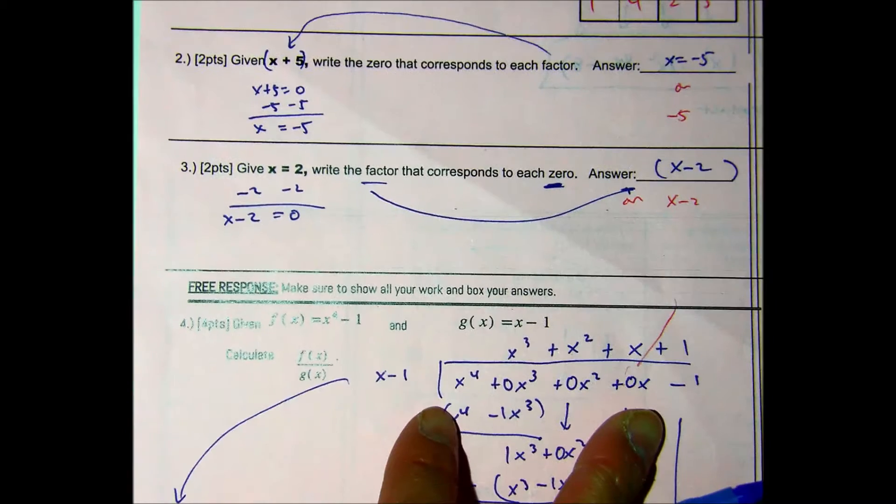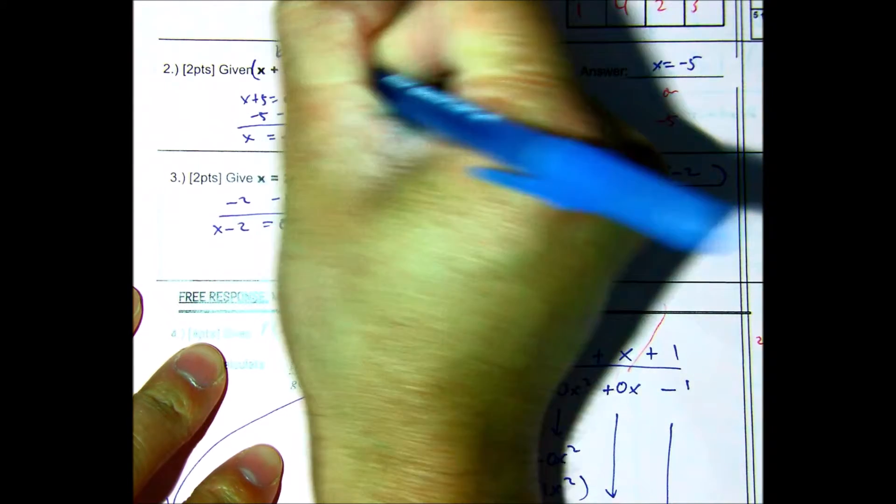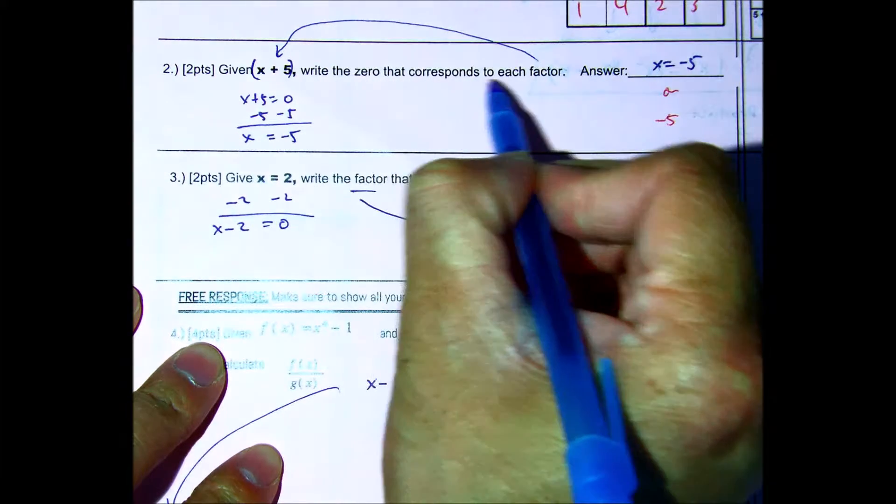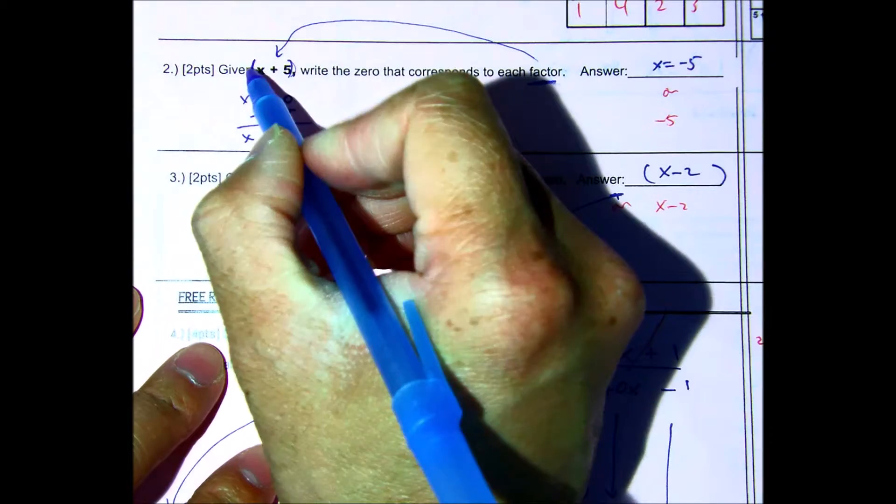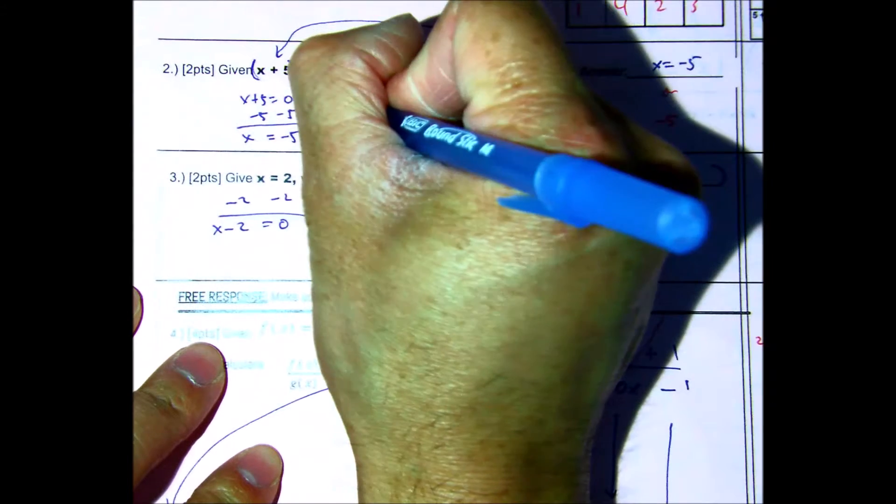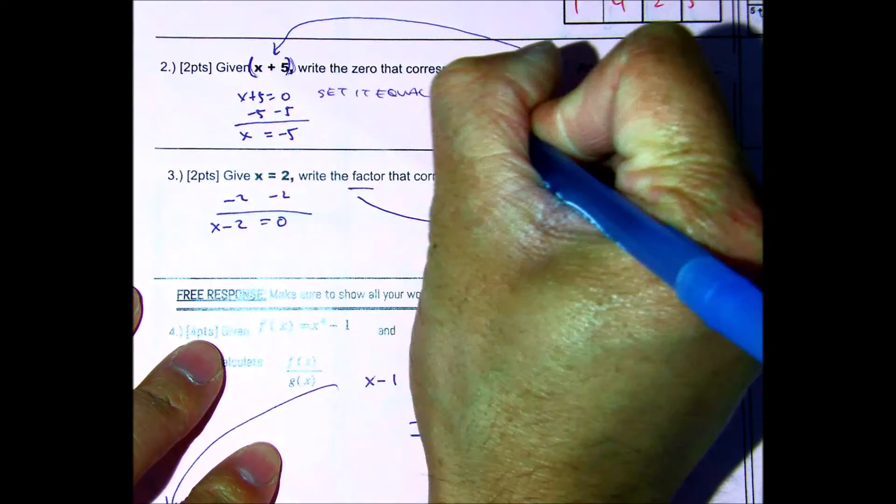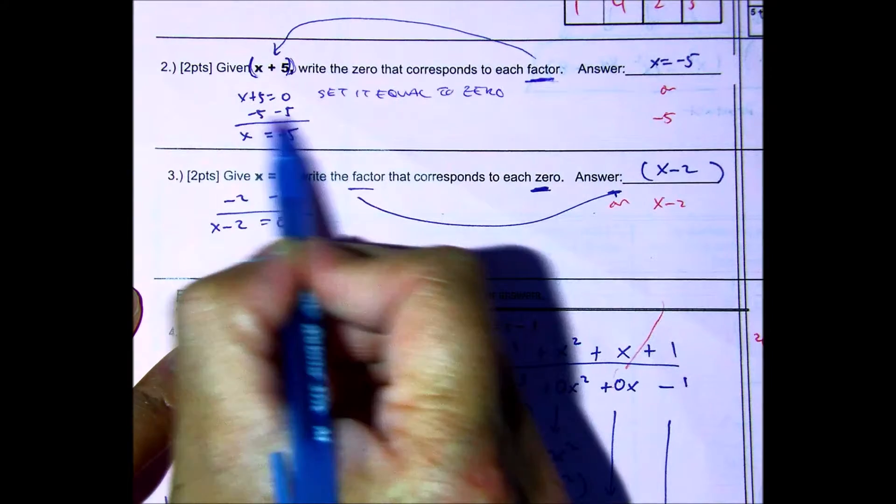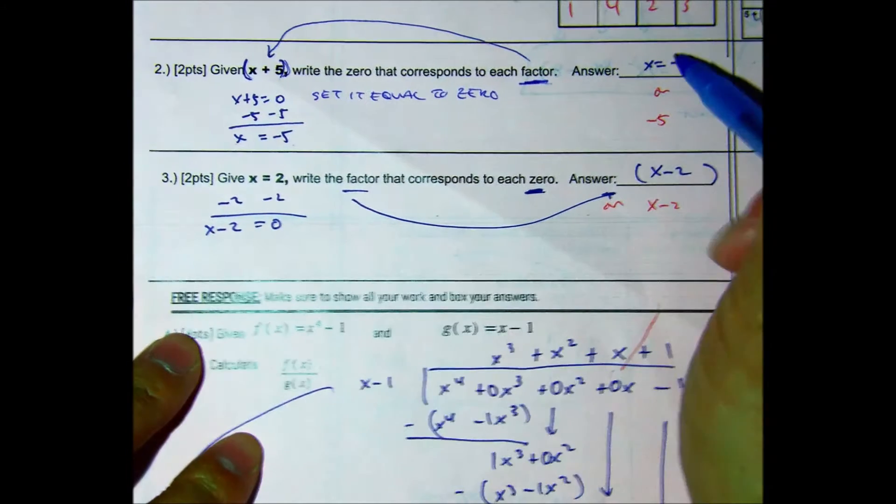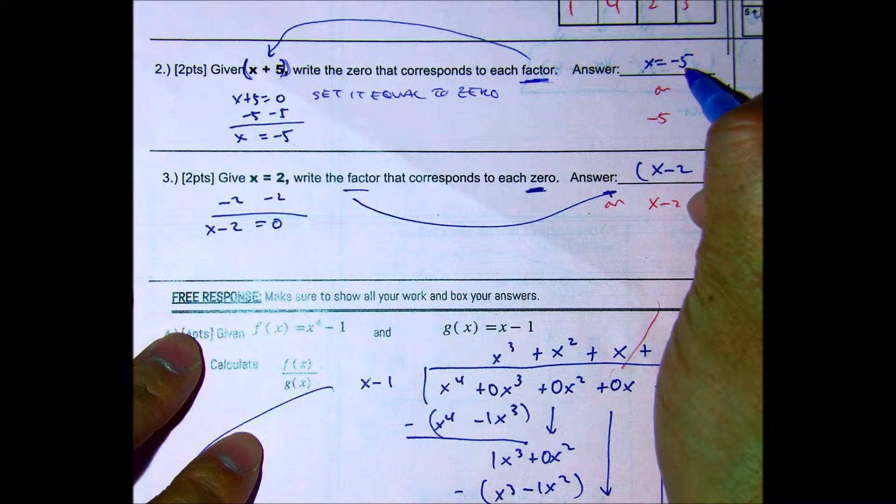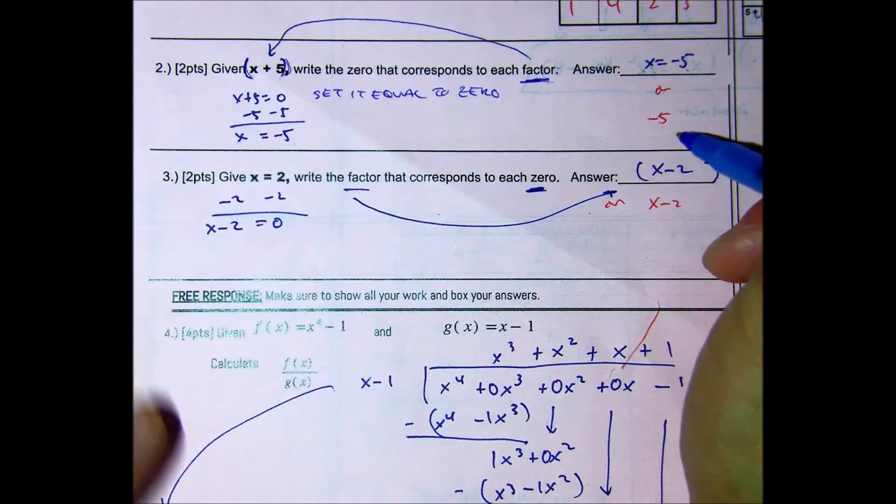Question number 2. Given x plus 5, so I try to make it really bold, write the 0 that corresponds to each factor. Well, what's the factor? The factor is this. If that helps you, you can put it around parentheses, and you set it equal to 0. Write that down. Set it equal to 0. So if you subtract 5 from both sides, your answer is x equals negative 5. So to receive the two points on this problem, you had to either write x equals negative 5, or if you wrote negative 5, that would have been acceptable as well. So that question was 2 or 0.